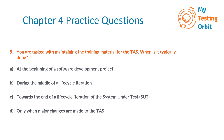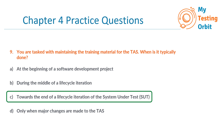The correct answer is C. Option C is correct because the maintenance of training material usually occurs towards the end of a life cycle iteration of the SUT, such as the end of the sprints. All other options are incorrect because they do not align with the timing for the maintenance of training material.